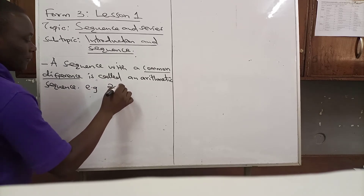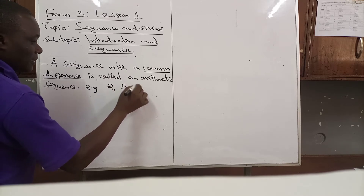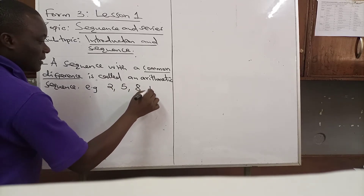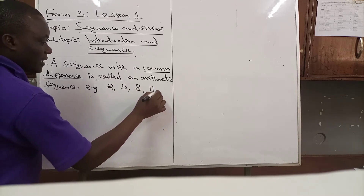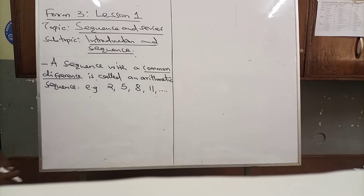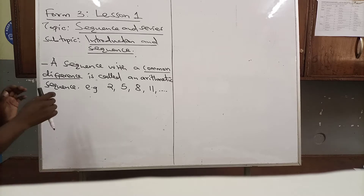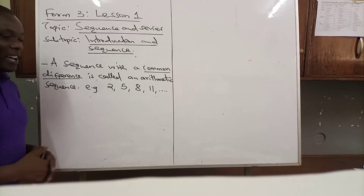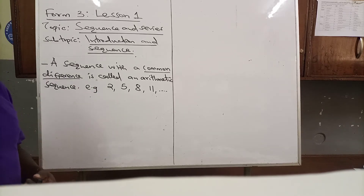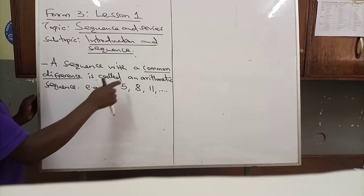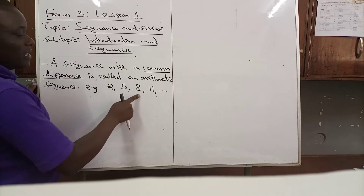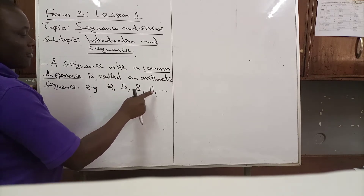For example: 2, 5, 8, 11. This is a sequence because the numbers written there are separated by a comma. So we have 2, we have 5, we have 8, we have 11.